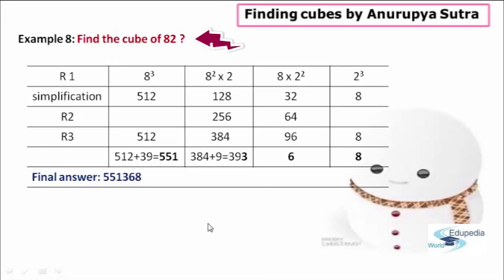After completion of the first row process, now moving to the second row — here what we have to do is double the answers we got in the second part and the third part of the first row. In the second part we got 128; doubling gives 256, written in the second row. In the third part we got 32; doubling gives 64, written in the second row.